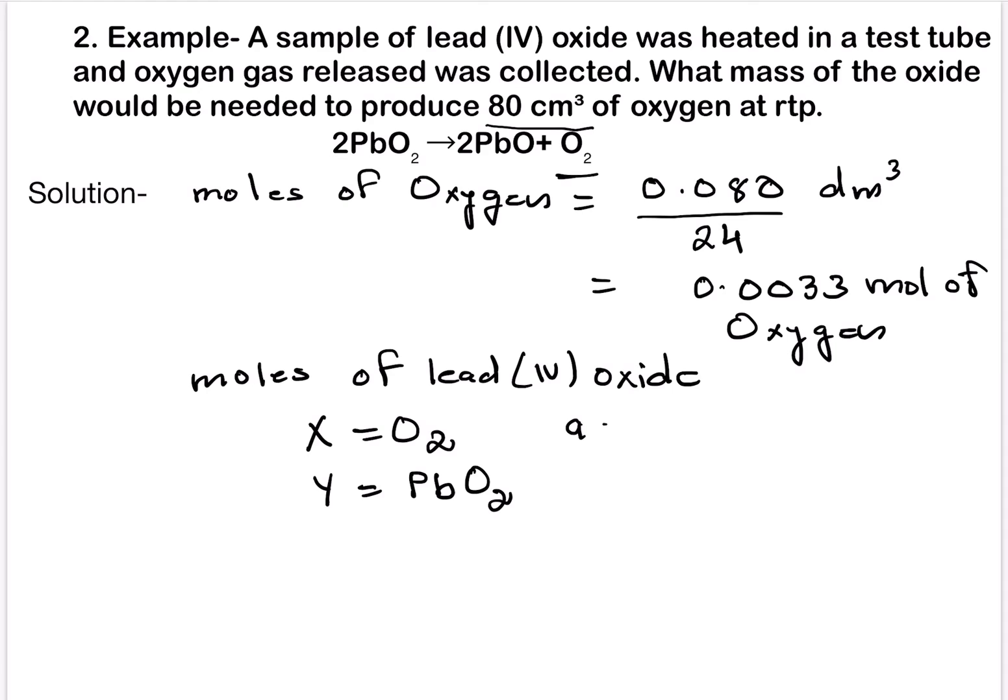A will be the stoichiometry of oxygen. What is the stoichiometry of oxygen? The coefficient of oxygen is 1. So 1 over there and B is the coefficient of lead. What it is? It's 2. So let's solve that.